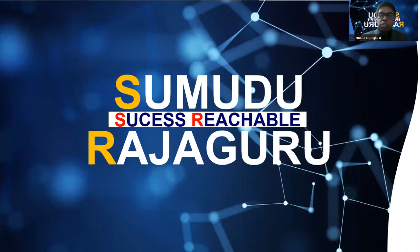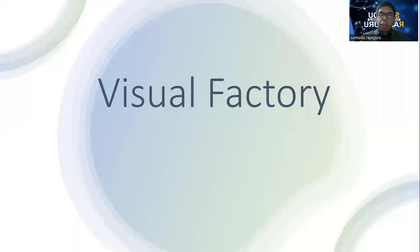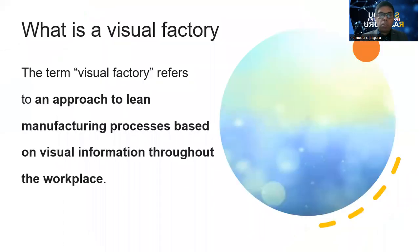Hello everyone. Today I am going to discuss with you one of the major concepts in lean manufacturing. It is called visual factory. Before we discuss about the visual factory concept, it is very important to know what is meant by visual factory. According to the definition, the term visual factory refers to an approach to lean manufacturing process based on visual information throughout the workplace.